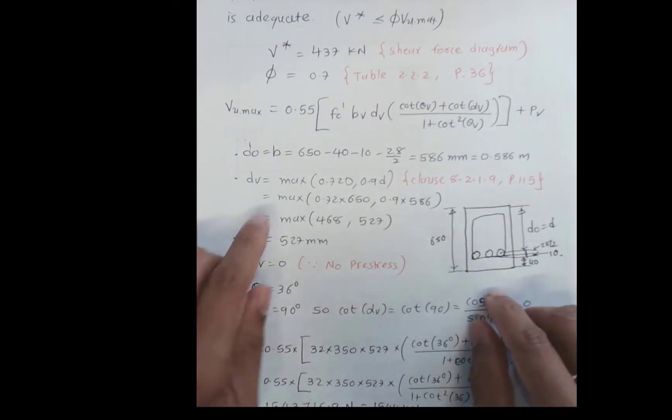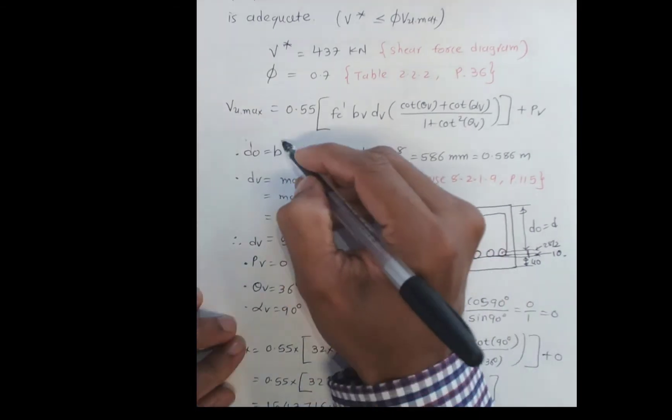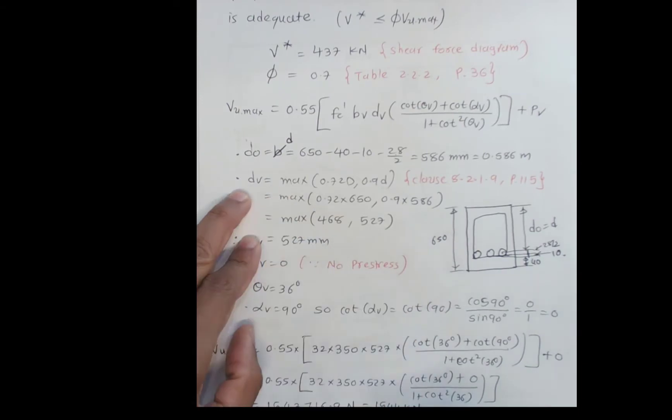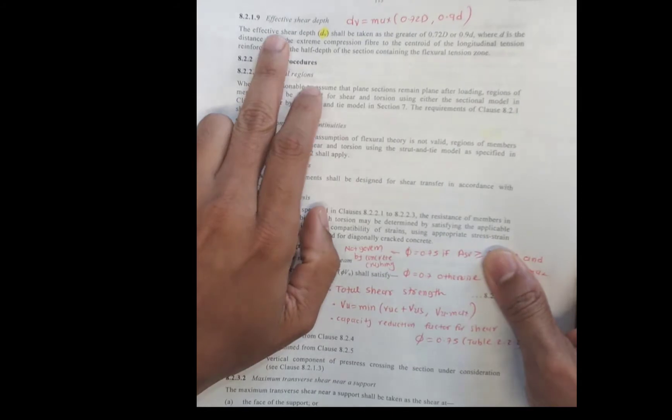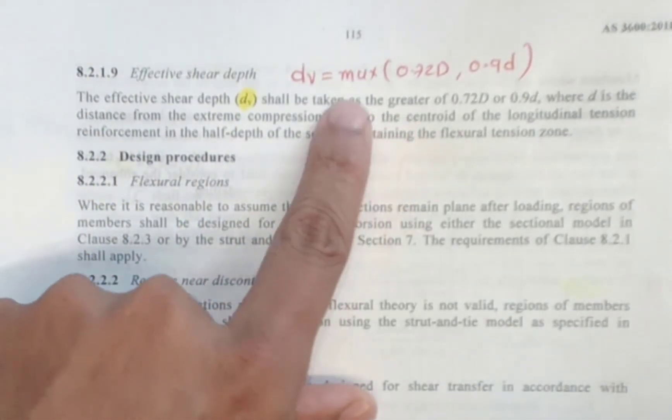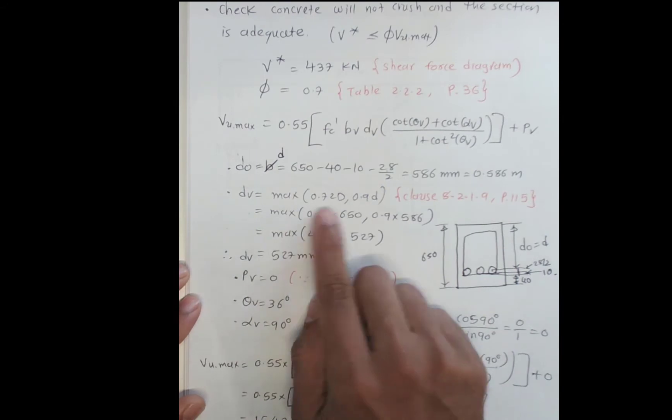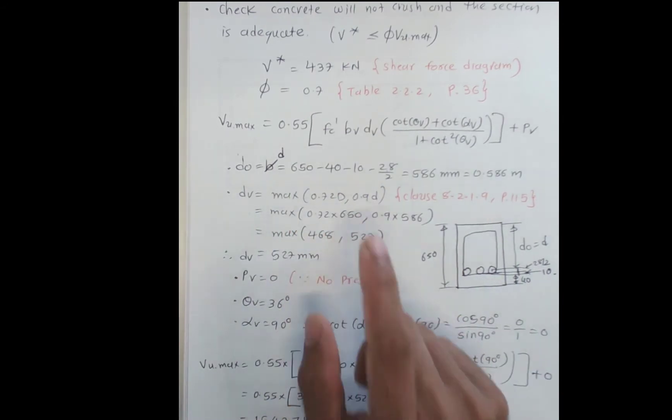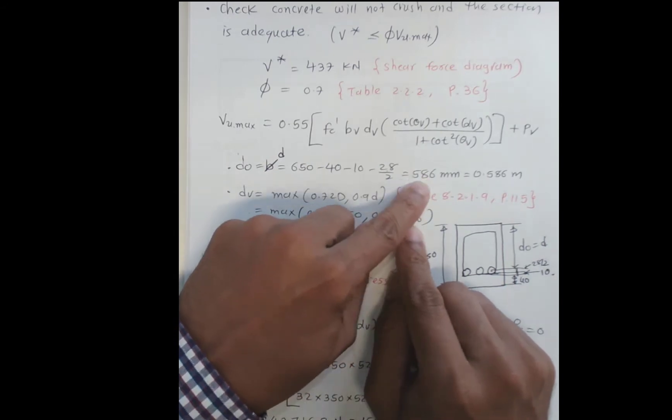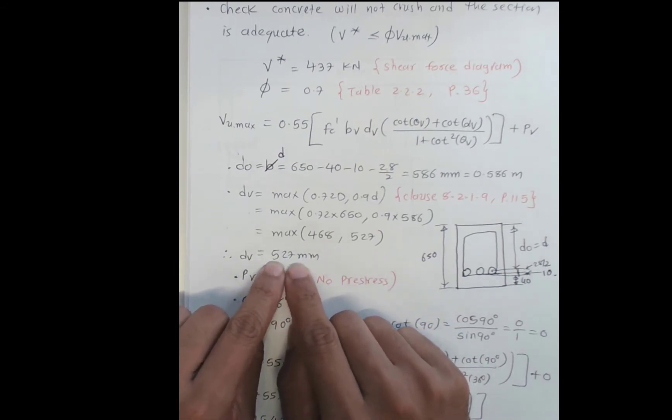After calculating d, we need to calculate Dv. Dv is the effective shear depth, defined in clause 8.2.1. It should be taken as the maximum of 0.72D or 0.9d. Maximum of 0.72 times 650 or 0.9 times 586 gives us maximum of 468 or 527. The maximum value, Dv, which is the effective shear depth, is 527mm.